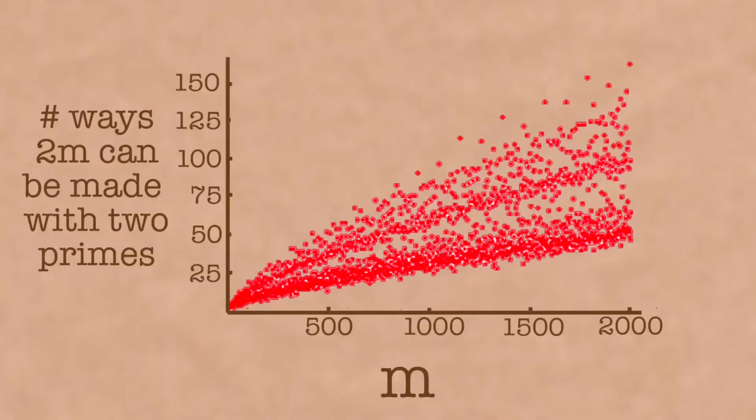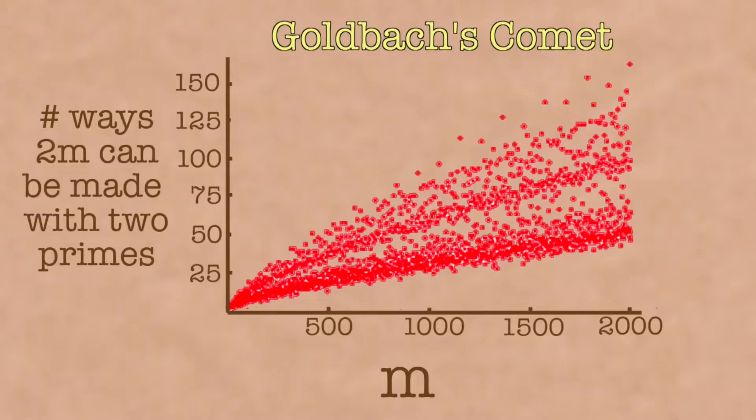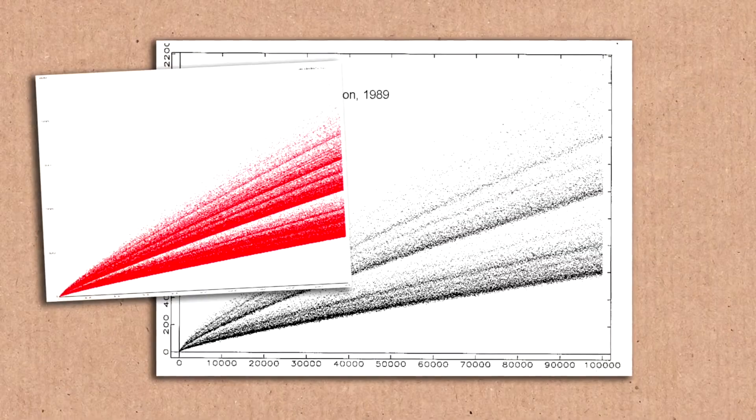And people have tabulated these things. There is something called Goldbach's Comet. For each number m, you show the number of ways of writing it as the sum of two primes. And it grows just as you would expect, like this. You see this wonderful picture. There's some variation, of course. Some numbers have lots of ways. Some have few.